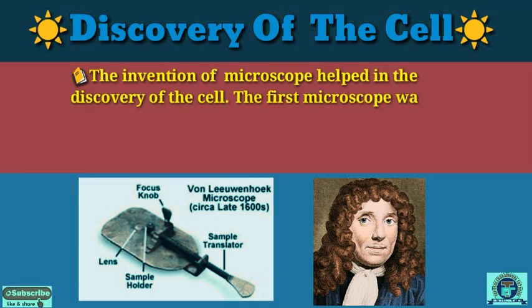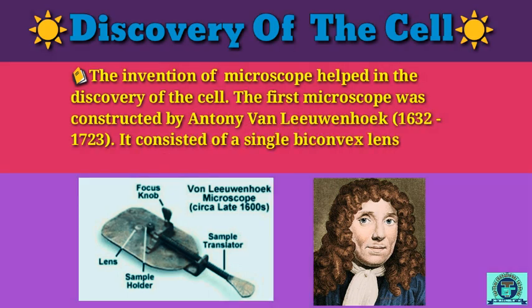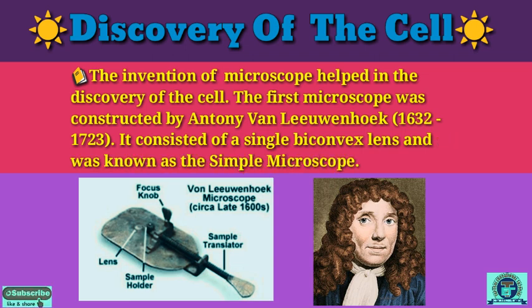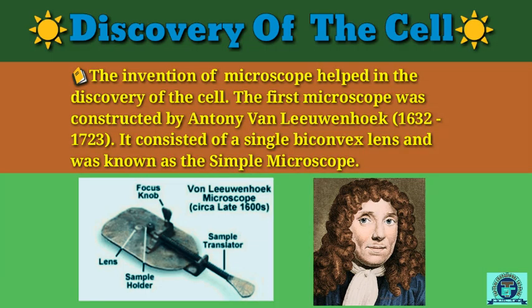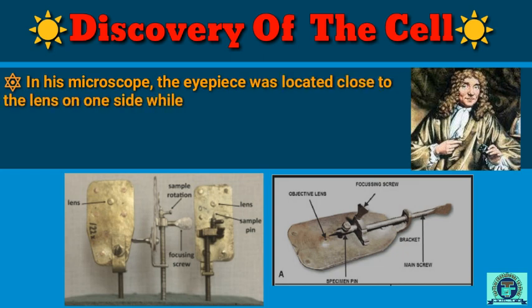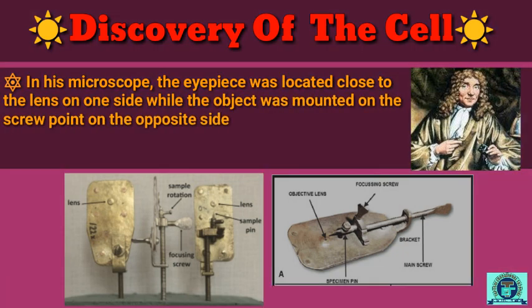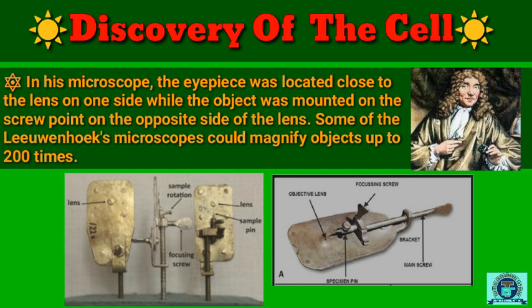Now we understand the discovery of the cell. The invention of the microscope helped in the discovery of the cell. The first microscope was constructed by Antonie van Leeuwenhoek. It consisted of a single biconvex lens and was known as the simple microscope. In this microscope, the eyepiece was located close to the lens on one side, while the object was mounted on a screw point on the opposite side of the lens.